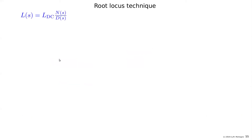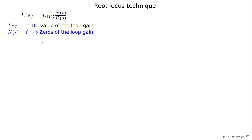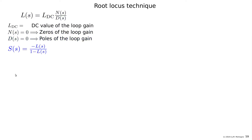We have the loop gain written according to the asymptotic gain model. Assuming a finite non-zero DC gain, we write it as the product of this DC gain, a numerator polynomial, and a denominator polynomial of the Laplace variable s. The numerator is described by the zeros of the loop gain, and the denominator by the poles of the loop gain. The several function can be written as the negative loop gain divided by one minus the loop gain. Substituting the expression with the DC loop gain and numerator and denominator as functions of s gives this expression.